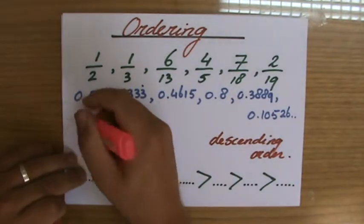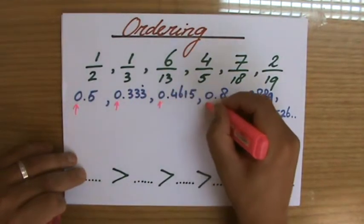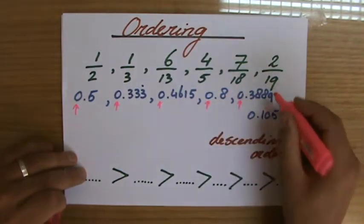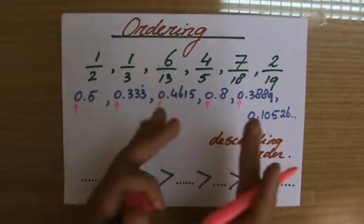What is the most important place value? Well, that's the unit, the zero. Well, that's all zeros, so they all have zero units. So we just move on to the next place value, and we're looking for the biggest number.